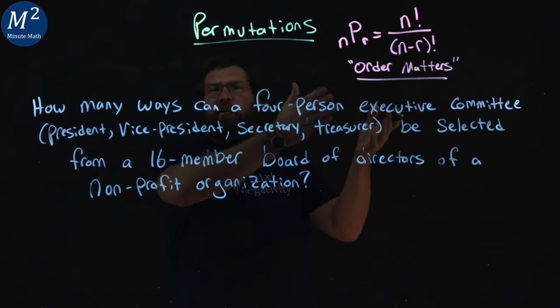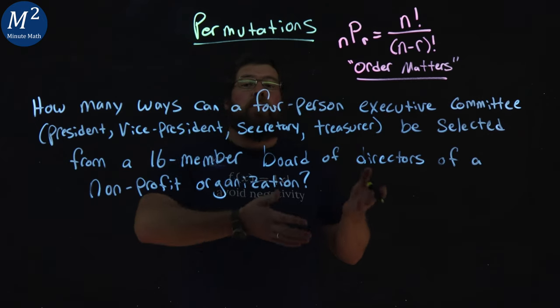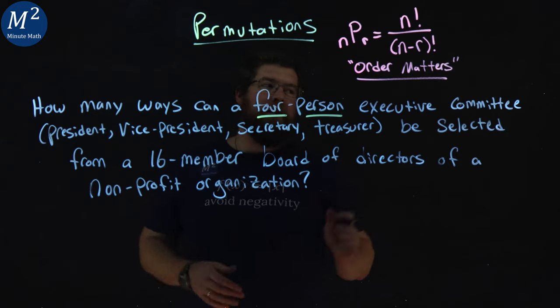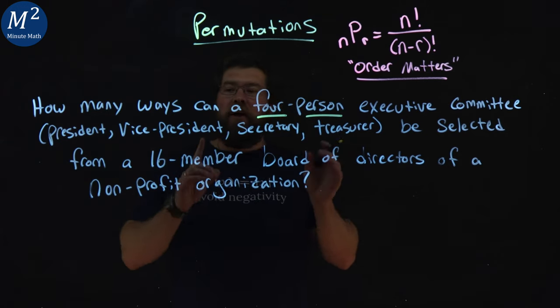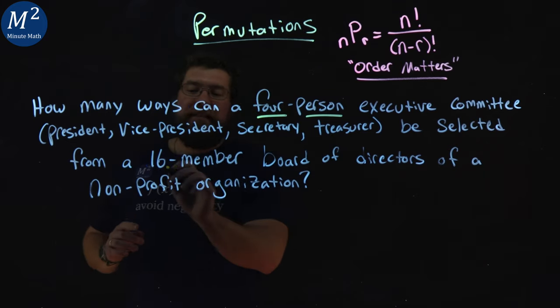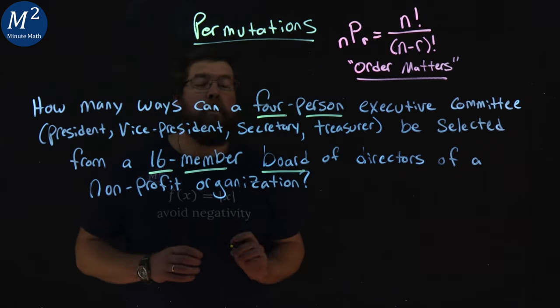This, again, order matters. We're going to be dealing with the permutation here. We have a four-person committee, and they told us the different positions they are, and they were being selected from a 16-member board.